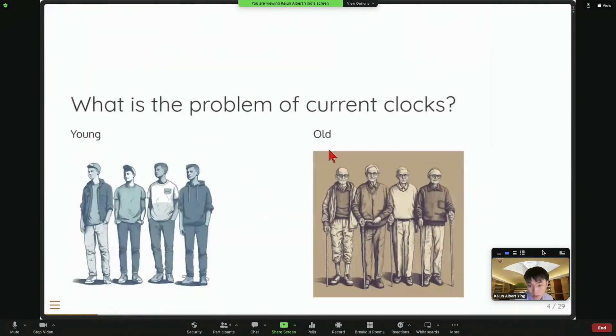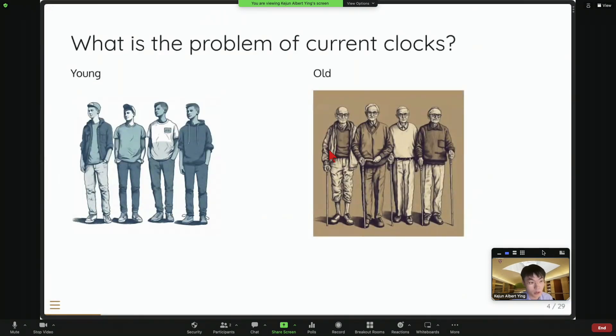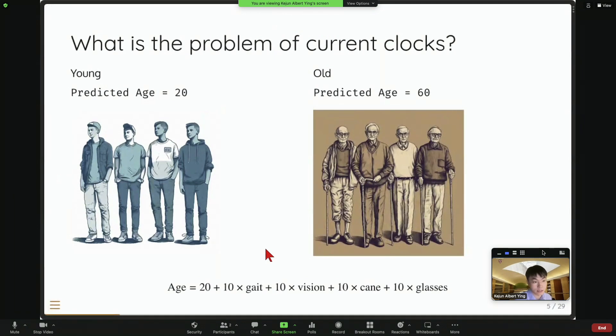Epigenetic clock is great, but there are some problems here. So to show you the problem, I will just invite all of you here to build a clock in real time with me right now. So what clock is doing is they take the feature from the population and then they use this feature to predict the age. So here from this figure of young people and old people, we can already take some features. For example, we know that old people have a slow gait speed, have worse vision. They use canes, they use glasses.